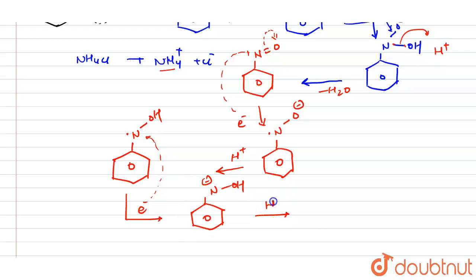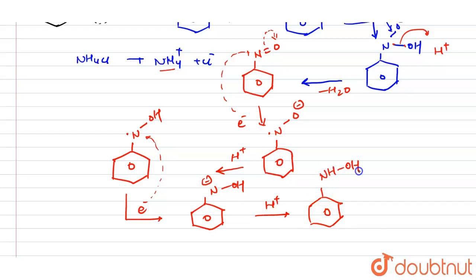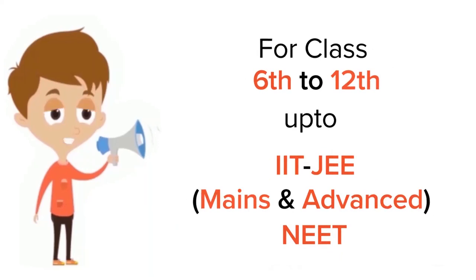In the last step, H⁺ comes and combines with N⁻ to form NH. So the final product is NH₂ — phenylhydroxylamine or aniline — and this is compound A. I hope you understand this concept. Thank you.